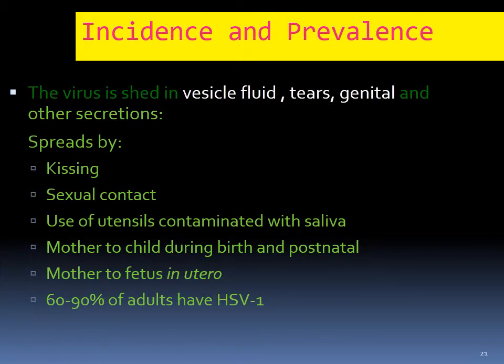When I say shedding, you have to keep in mind shedding of viruses in secretions. You can see vesicular fluid — if you have a skin lesion, it's filled with vesicular fluid, so anything that touches it is going to spread. Tears, genital, and other secretions are important. For example, you have herpes labialis and you want to kiss a baby — you're going to pass it on to the baby. Especially for shedding through utensils, vertical transmission from mother to baby, and mother to fetus in utero — if the mother is having herpes infection, that can also pass to people.